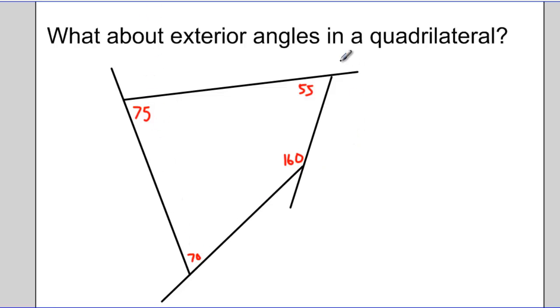So I know this quadrilateral. I know what the interior angles are equal to. I know that these are straight lines. So I know that to find this angle, I would do 180 degrees take away 75, and I get 105 degrees for this first exterior angle.